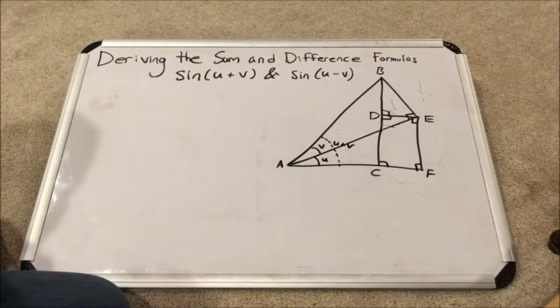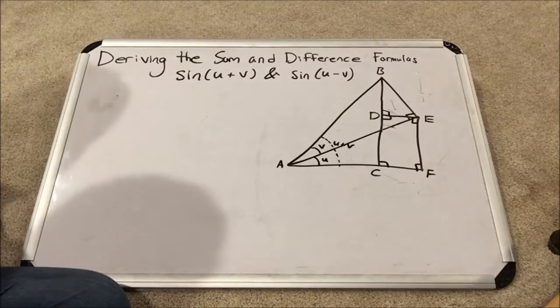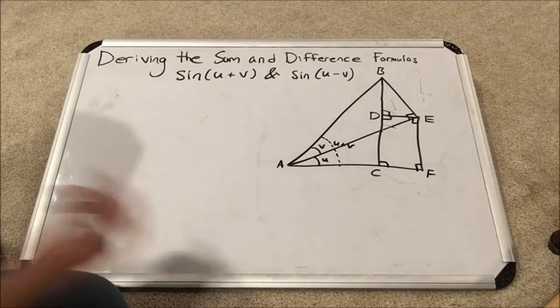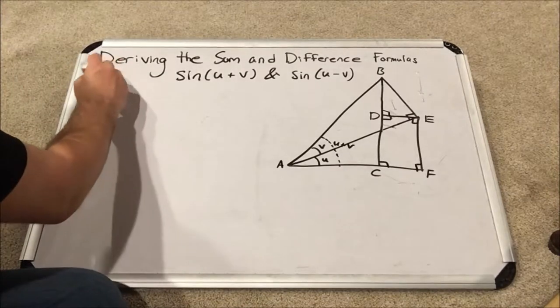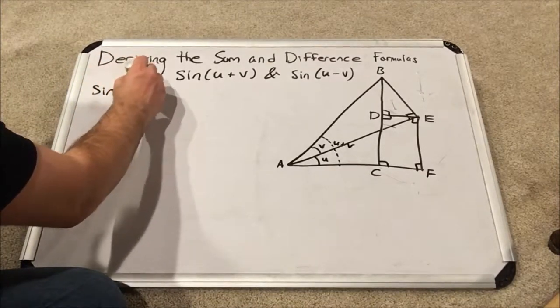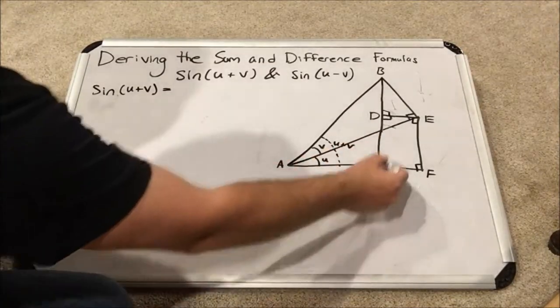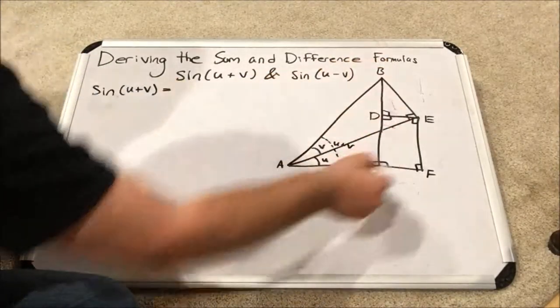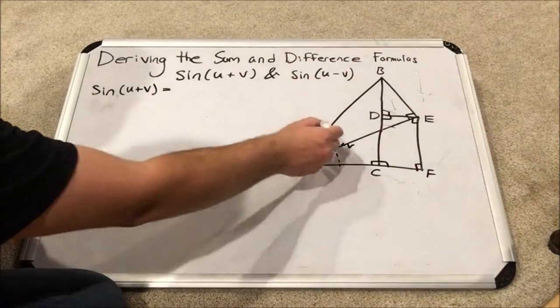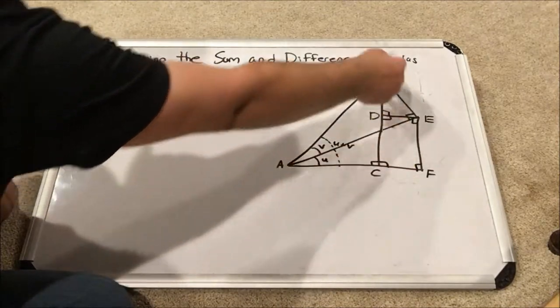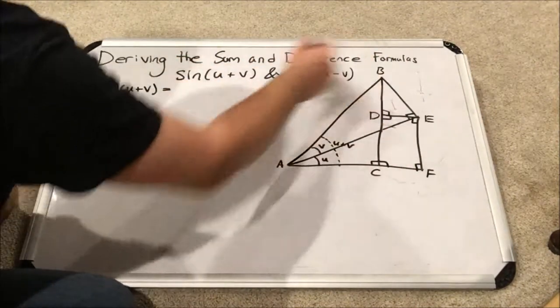Now we're going to write out directly using this figure a way to express the sine of u plus v. Right off the bat, if we use this particular right triangle here, triangle ABC, we will see that this angle, the sine of that angle will be the opposite side BC over the hypotenuse AB.